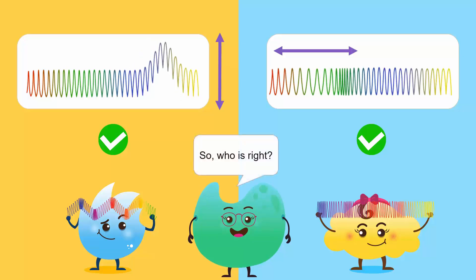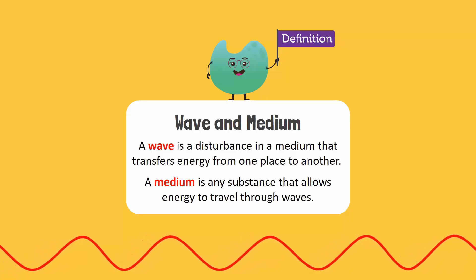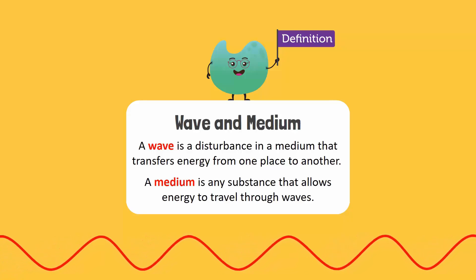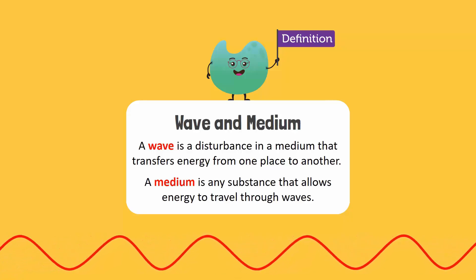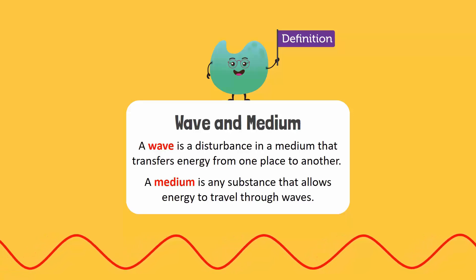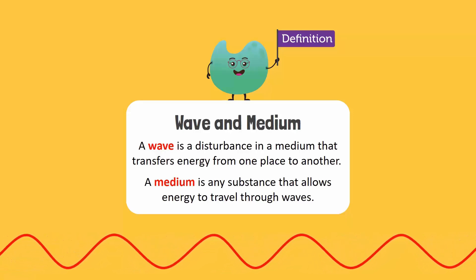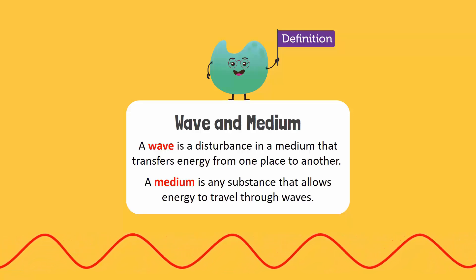Let us first see what waves are. By definition, a wave is a disturbance in a medium that transfers energy from one place to another. A medium is any substance that allows energy to travel through waves.